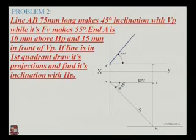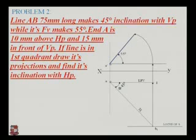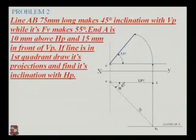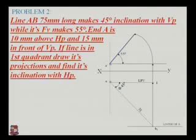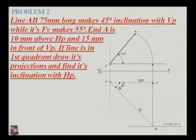Extend the line B1 to the projection of A-dash. Take the distance of A-dash to the intersection point of the line B1 in the compass, center at A-dash, and make an arc up to the intersection point of the front view line at 55 degrees from the XY line. The intersection of the front view line and the arc gives point B-dash, which is the projection of the front view.